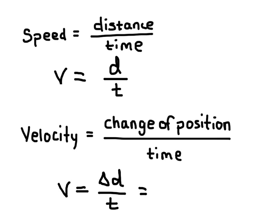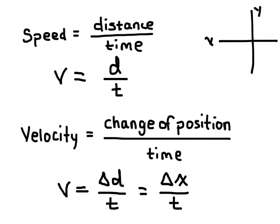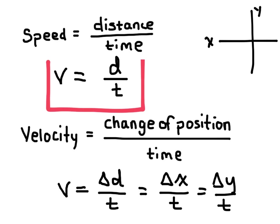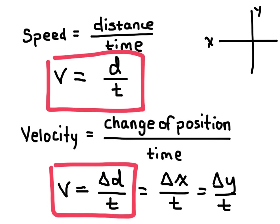You may also see delta X over T used for velocity, where delta X indicates that position is changing in the X direction. If we had a coordinate system with X and Y axes, we could also have delta Y over T. So here's our equation for speed, and here's our equation for velocity.